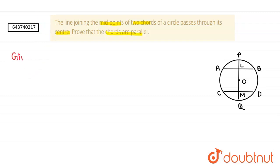So given are: AB and CD are two chords of the circle.